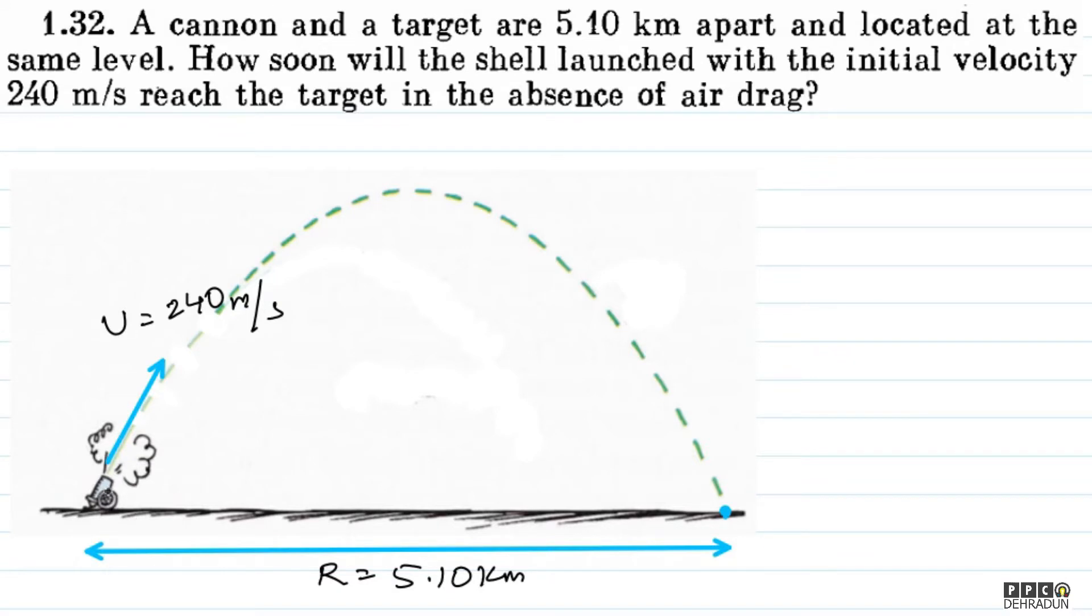Basically, the question is that a cannon is here and here is a target. The distance between them is 5.10 km and the initial speed is 240 meters per second. Without air drag, we need to find how much time it will take for the shell to hit the target. The cannon and the target are at the same level.